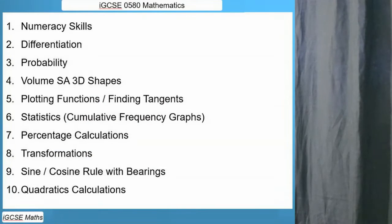0580 is slightly different. So there is more emphasis on differentiation, for example, also being able to use a table of values and work out a specific function in intersection points.